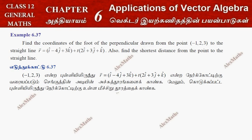Hi students, this is Alex here. Example 6.37: Find the coordinates of the foot of the perpendicular drawn from the point to the straight line. Also find the shortest distance from the point to the straight line.